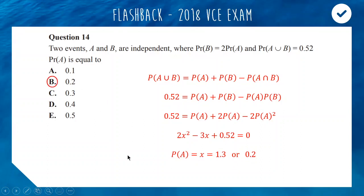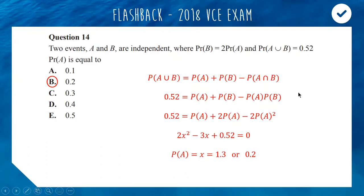There's a lot going on there. You need to understand and recognize this formula, know that independent events mean the intersection is a product, and then apply the information from the question and solve the quadratic. A really tough question — so bravo, Victoria.